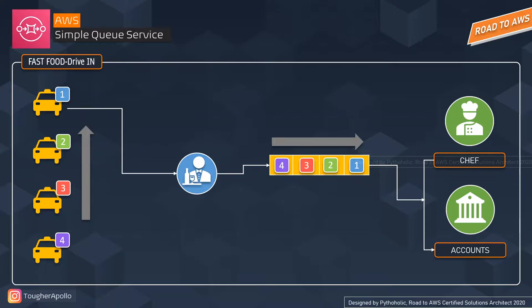You can see the food counter and the billing station, with service provisioned by the server taking the order. People willing to process the order travel in a single queue where each request or order is processed only once. The order numbers 1, 2, 3, 4 are processed sequentially. These types of queues are also called FIFO, and if you consider each food order as a message, the processing here can be termed as sequential message processing.